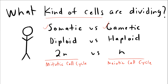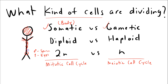Looking at this person here: everything except the cells used for reproduction — in males, sperm, and in females, the ova or eggs — everything else is a somatic body cell. We're talking muscles, organs, skin, brain cells — everything with the scribbles on it are somatic body cells.